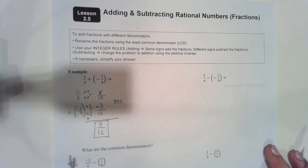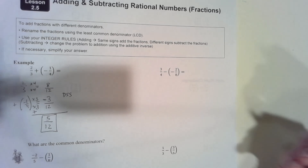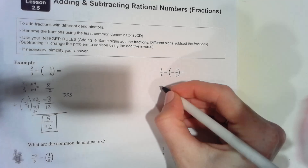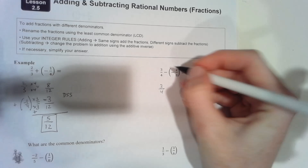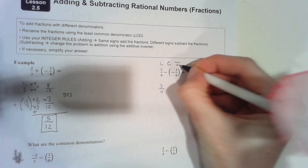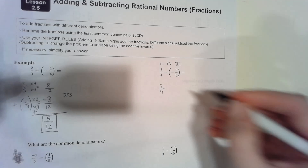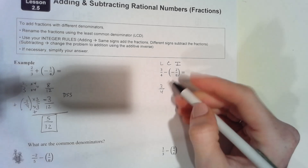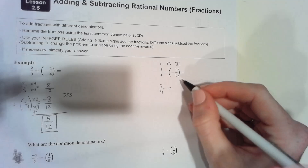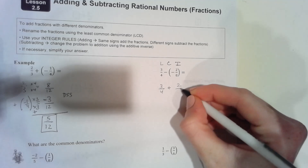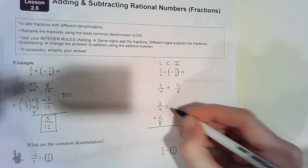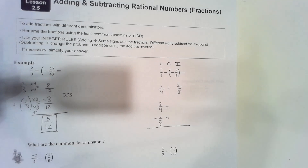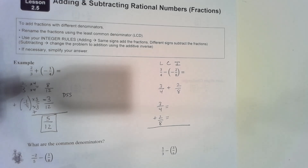Moving on. Same thing — I could multiply these two denominators together, but first I want to change this into an addition problem. That will make my life a lot easier. Leave-change: subtraction to addition, and the inverse of negative two-eighths is just positive two-eighths. So much easier to work with now.